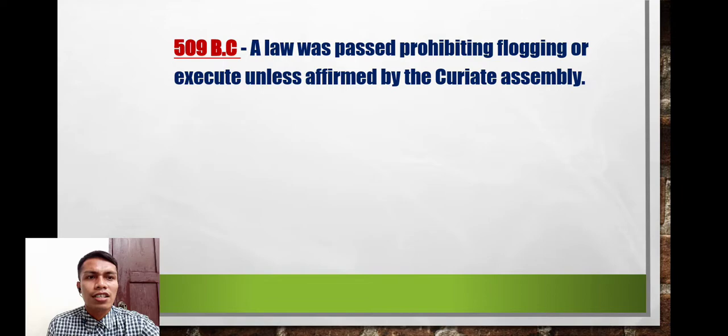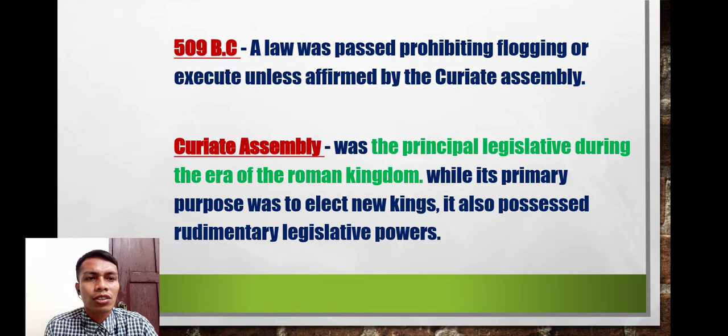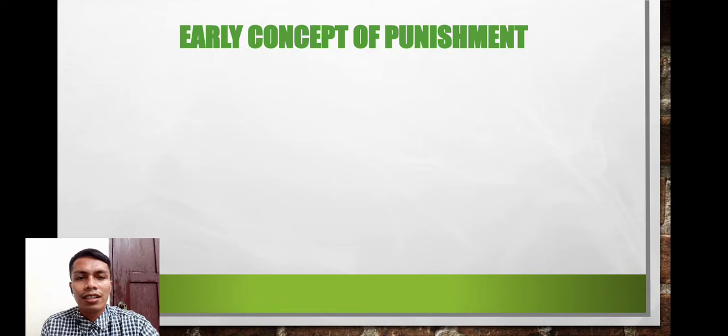Around 509 BC, a law was passed prohibiting flogging or execution unless affirmed by the Curiate Assembly. The Curiate Assembly was the principal legislative body during the era of the Roman Kingdom. Its primary purpose was to elect new kings, but it also possessed rudimentary legislative powers.